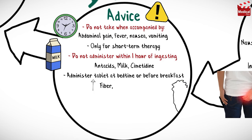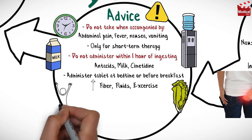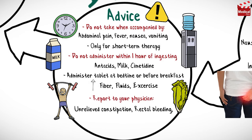Incorporate high-fiber foods in diet, increase fluid intake to 6–8 glasses daily, and increase or maintain exercise level. Report the following symptoms to your physician: unrelieved constipation, rectal bleeding, muscle cramps, pain, weakness, or dizziness.